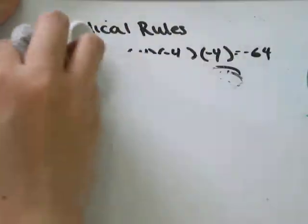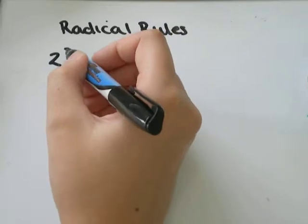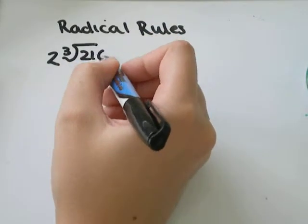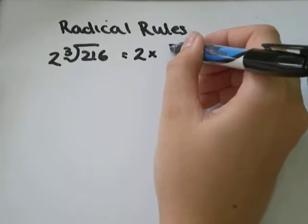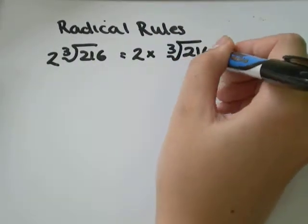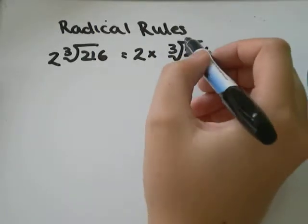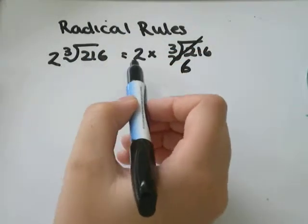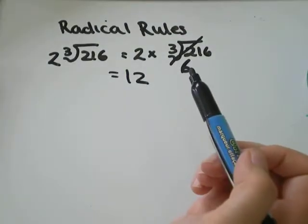Let's do another example of a mixed radical. You'll see things that look like 2 times the cubed root of 216. That means 2 times whatever the cubed root of 216 is. On my calculator, 216 to the exponent of 1 divided by 3 gives 6. So 2 times 6 equals 12 — 2 times the cubed root of 216 is equal to 12.